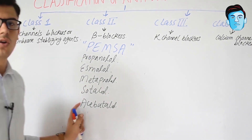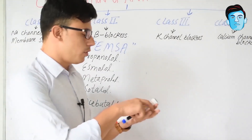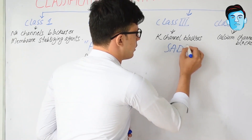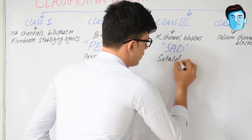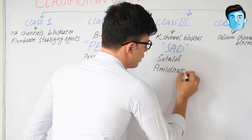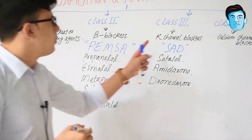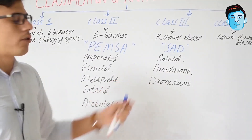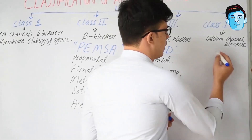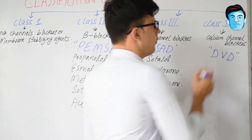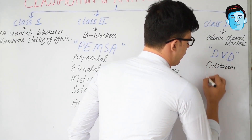Class 3 are basically potassium channel blockers. For these we have a trick: SAD, where S stands for sotalol, A stands for amiodarone, and D stands for dronedarone. Now for class 4, the calcium channel blockers, we have the mnemonic DVD. This class contains diltiazem and verapamil.